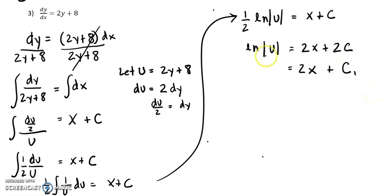Let's call it c1 for fun. Plugging back in what u was, that gives us ln of 2y plus 8.